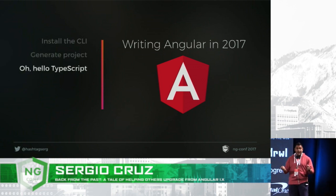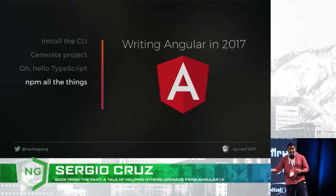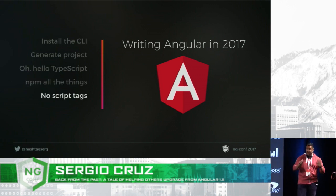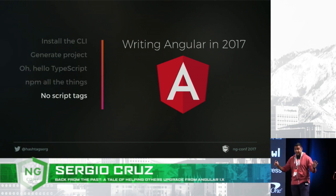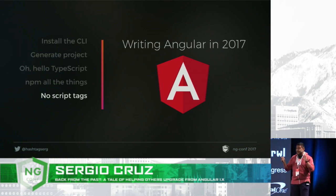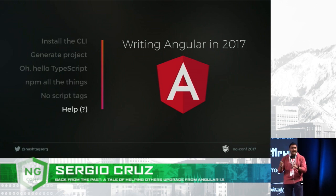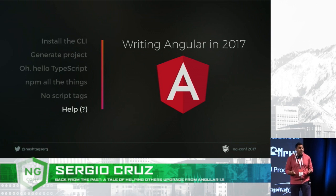There's this TypeScript that we've got to get used to. We use NPM, all the things — no more going to websites and downloading scripts manually like I did in 2013. No script tags either — that's all handled automatically for us by the CLI, which is great. But there's a lot of magic happening, and when you get stuck, where do you go for help?